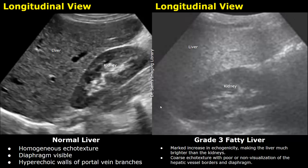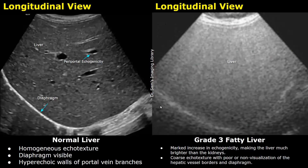This is another image showing a grade three fatty liver. There is increased echogenicity of the liver parenchyma, it is difficult to see the intrahepatic vessels, and there is poor visualization of the diaphragm.